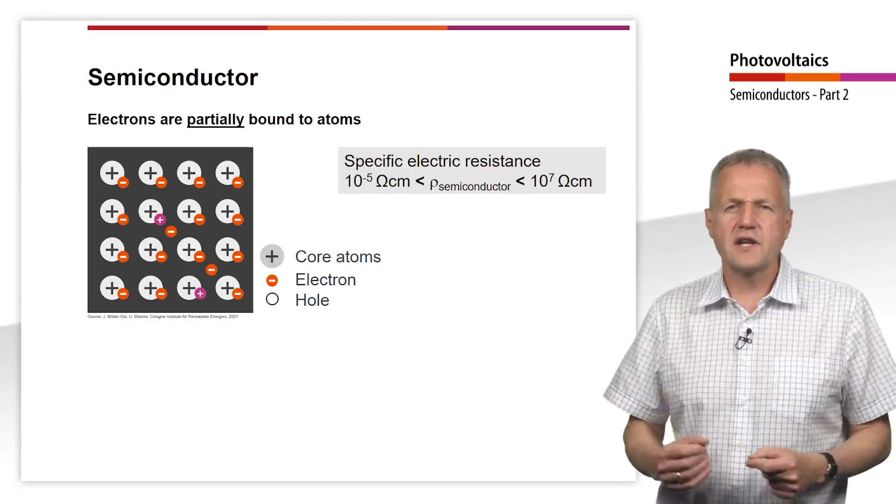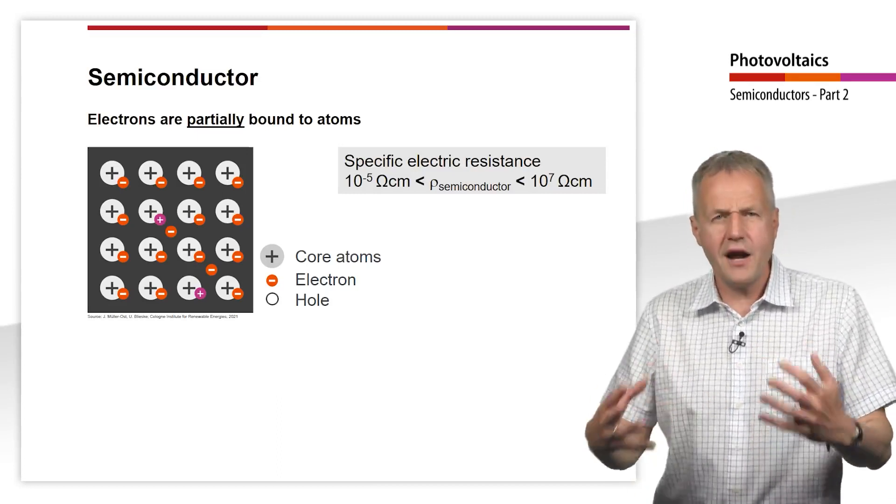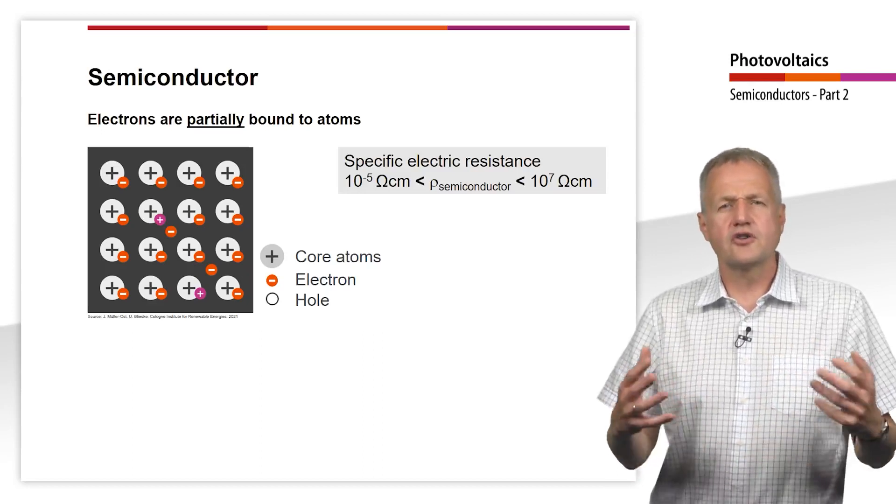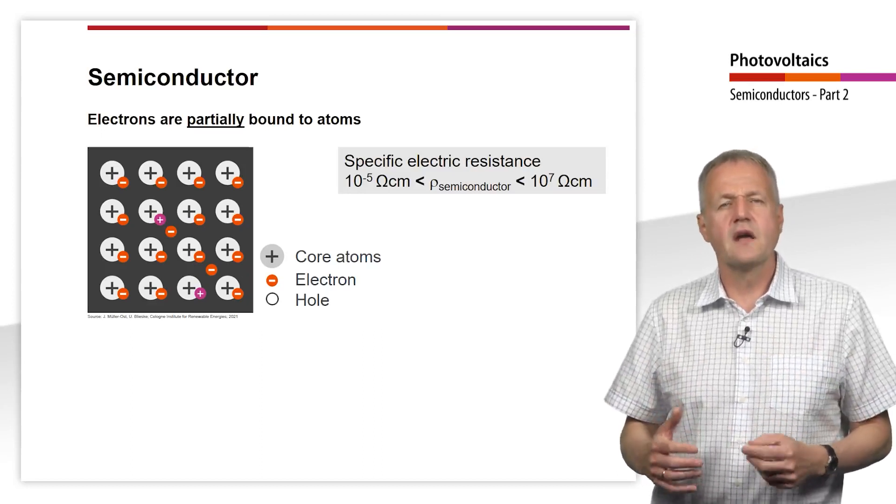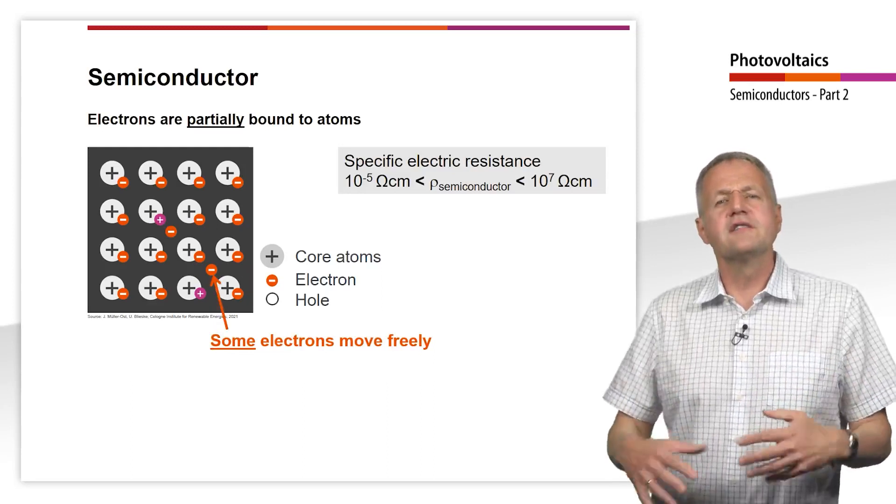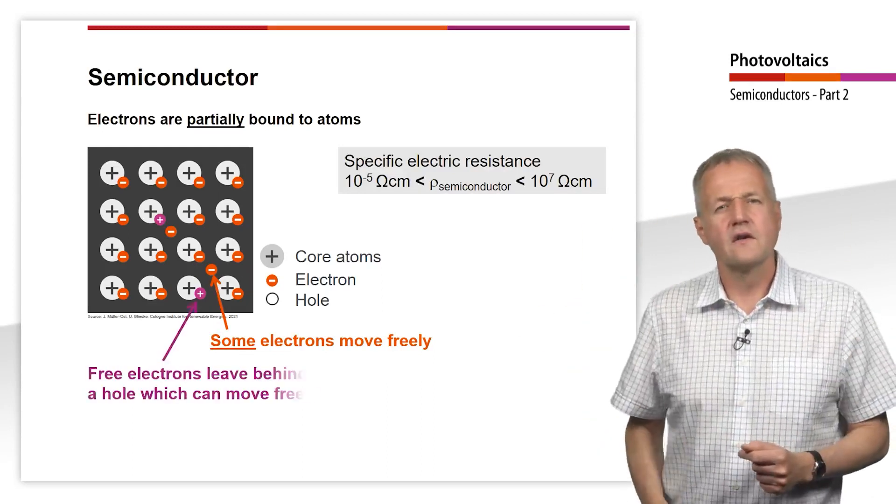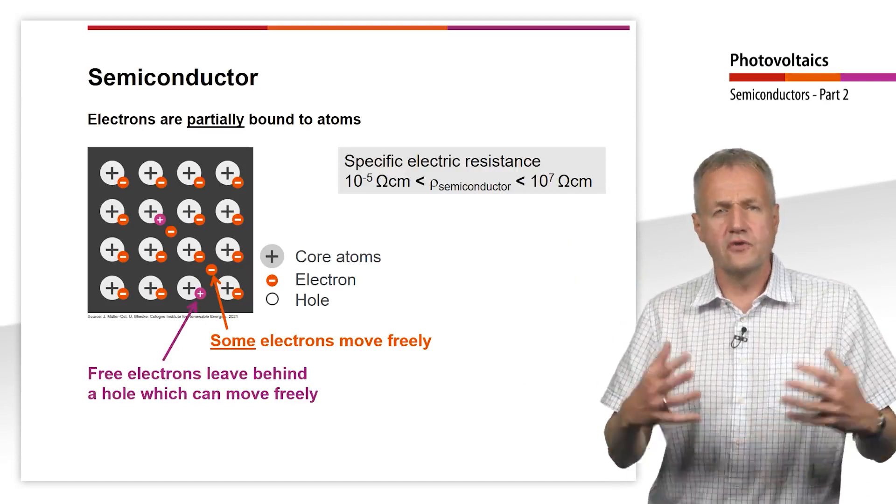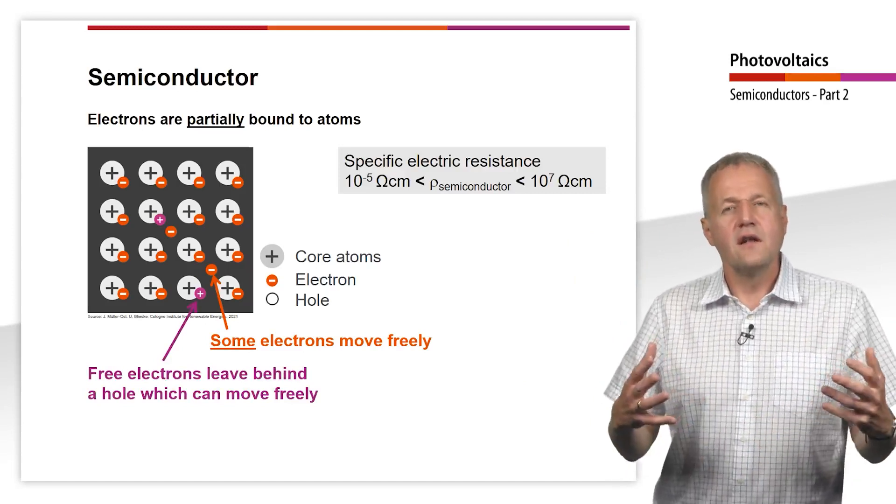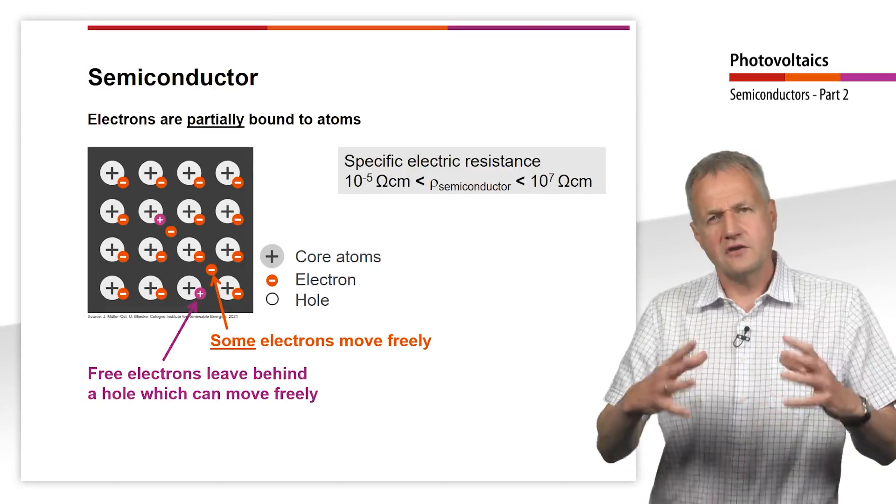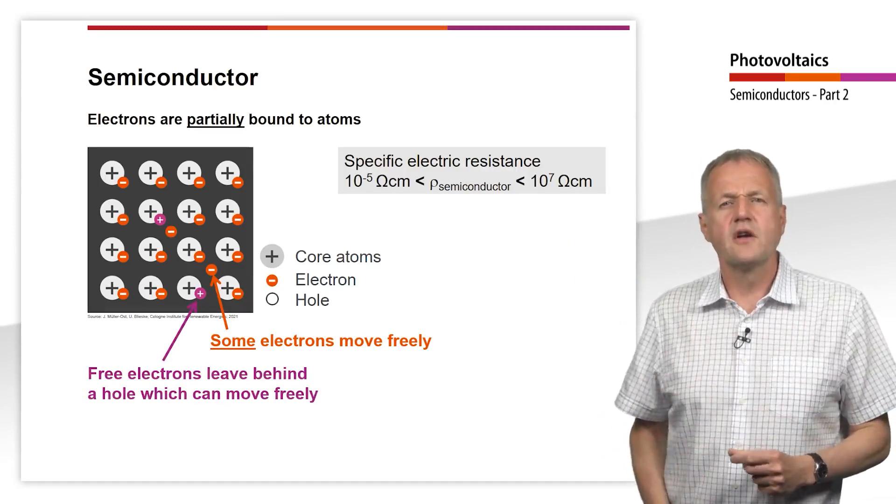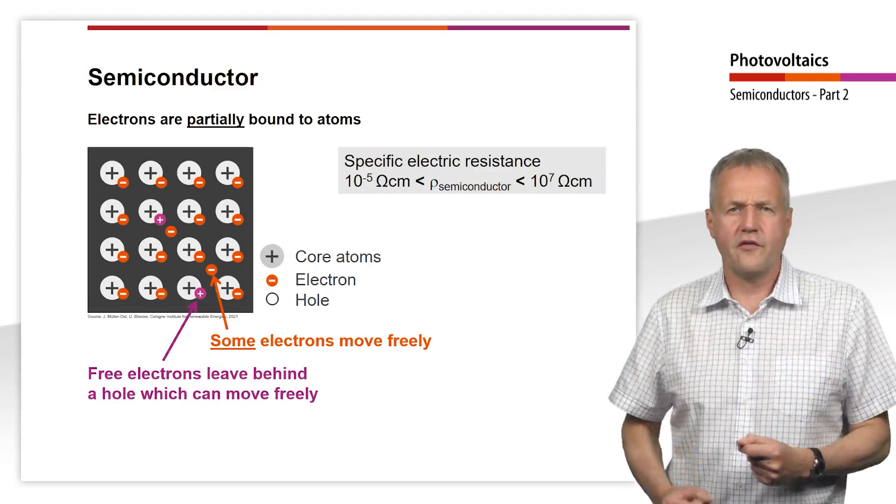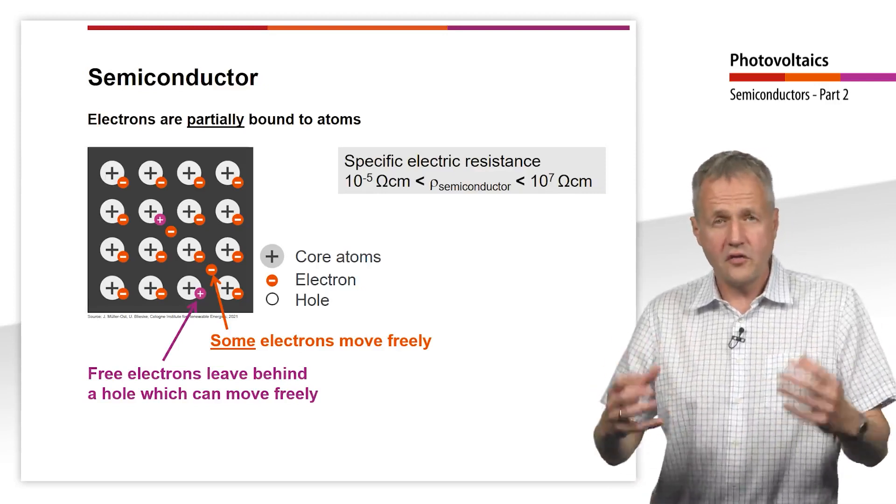In the semiconductor, the electrons are partly bound to atomic nuclei. Partially, however, the electrons can move freely. Where electrons have detached from the atomic nucleus and leave the atomic core atom, so-called holes are formed, which can also move.